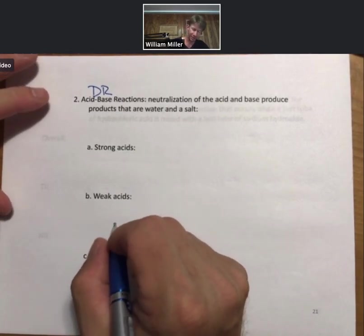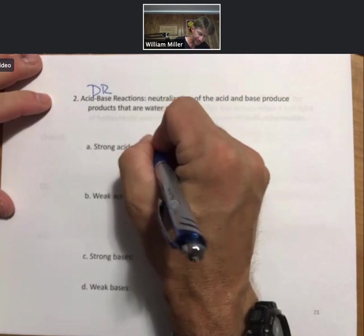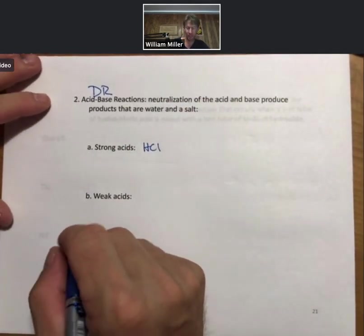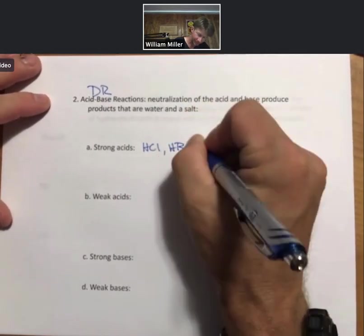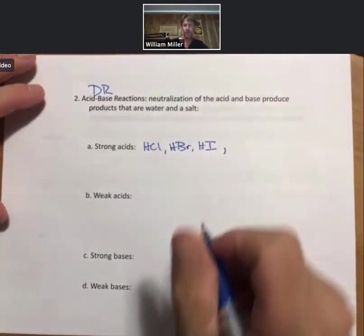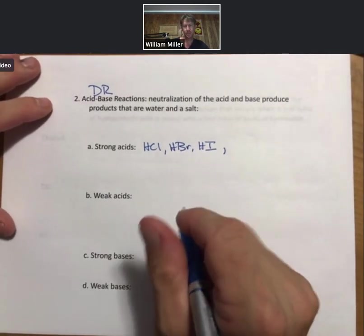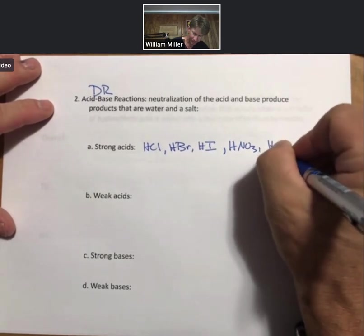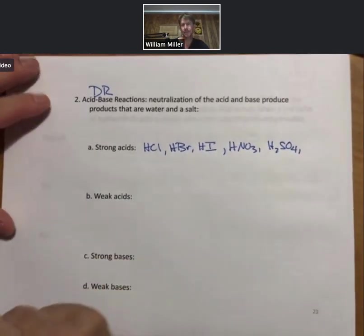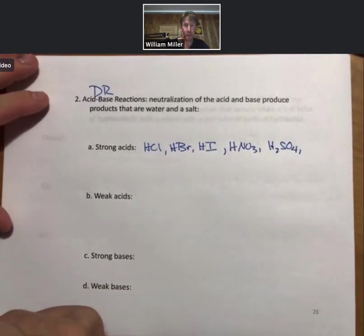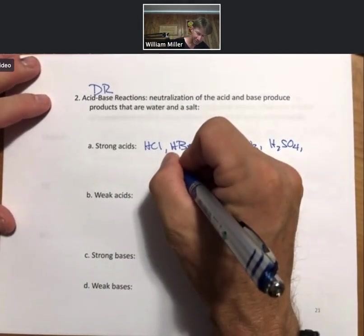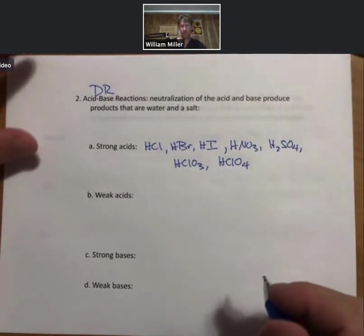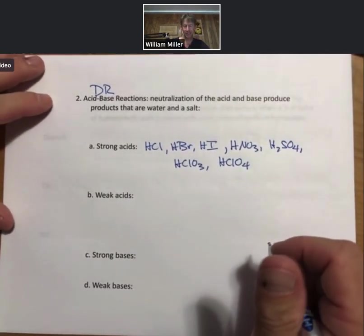Strong acids, there are seven of them. Hydrochloric acid, hydrobromic and hydroiodic acid, nitric, sulfuric, chloric and perchloric. Those are always the two I think of last. They're the least common in general chemistry. Seven strong acids. That's it. Memorize them. Know them.